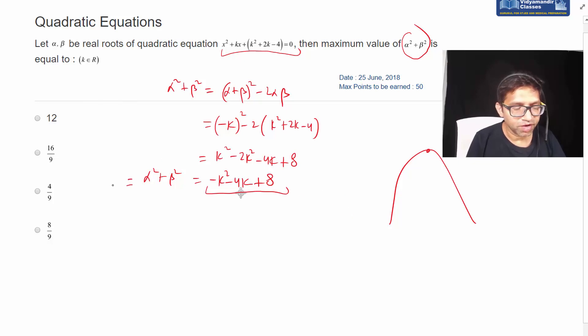Or we can let it be a function f(k) and apply differentiation. If we take derivative, you can find the point of local maximum. That is minus 2k minus 4, and we put derivative equal to 0, we get k equals to minus 2.